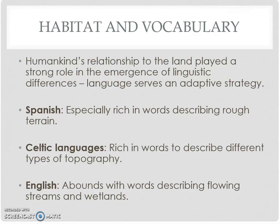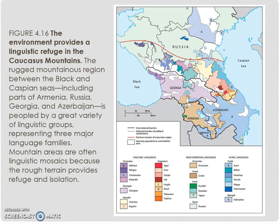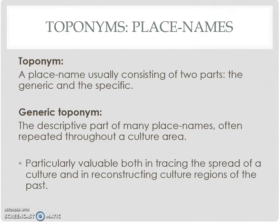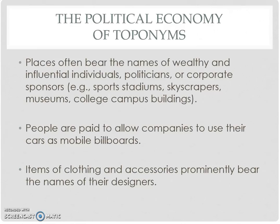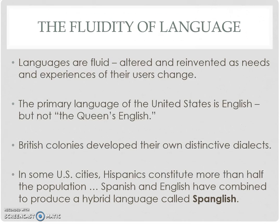Habitat vocabulary refers to different languages having to do with different adaptive strategies. We see different flows of languages with similar originations. Toponyms — place names — can shift over time in what's called a toponym shift, where names are changed. We also see fluid language, where different languages can be merged together, like Spanglish — hybrids where different languages are spoken together. That's really interesting and one of the more fun chapters.